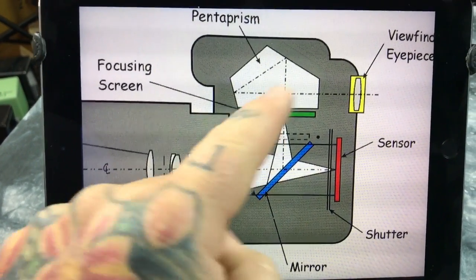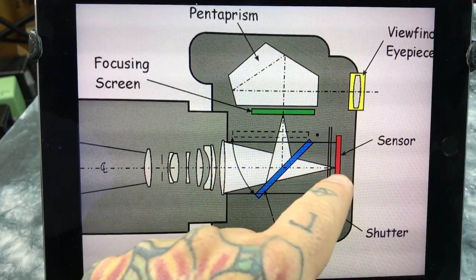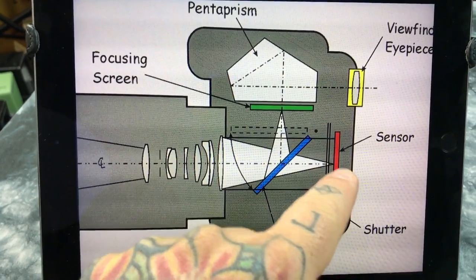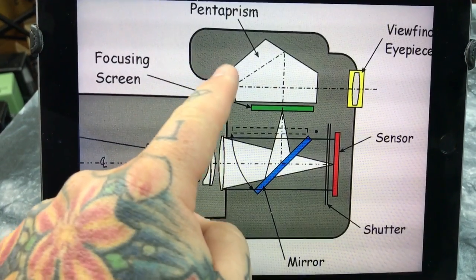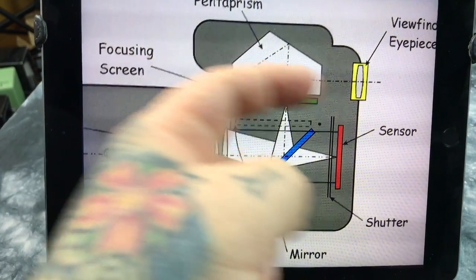The mirror flips out of the way, the sensor gets the information. It feeds that data, the same as on any mirrorless camera. It feeds that data to the electronic viewfinder, which is turned on.